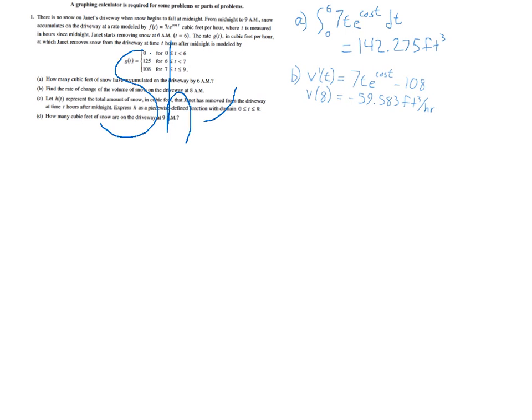Now part C says let H(t) represent the total amount of snow in cubic feet that Janet has removed from the driveway at time t hours after midnight. And then express H as a piecewise defined function with domain 0 to 9. So of course if we're talking about the removal and it's going to be piecewise, we're going to use the same exact pieces as we have for g. So we're going to split it up for the first six hours, the next hour, and then the final two hours.